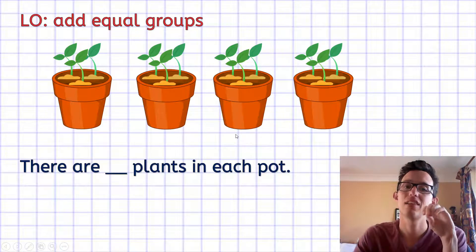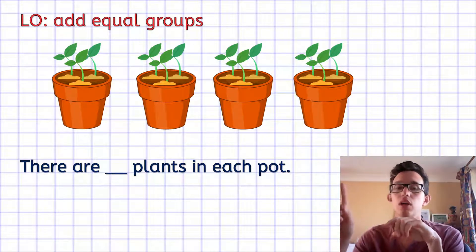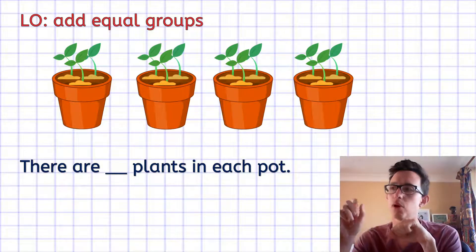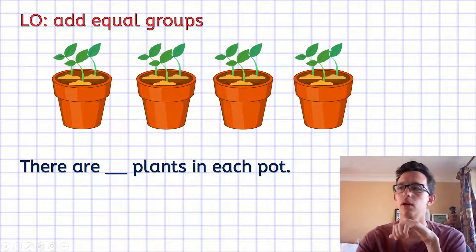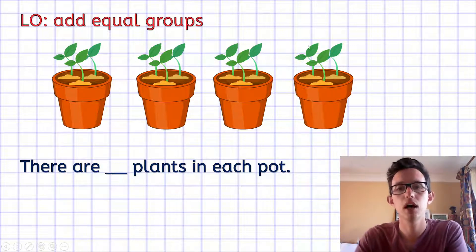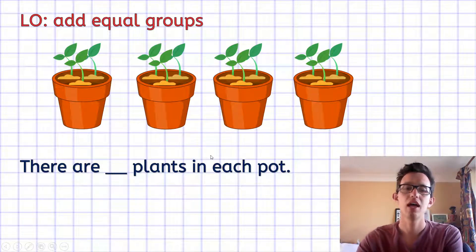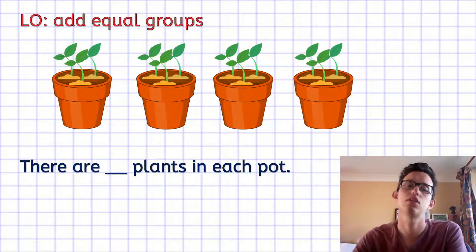The first thing we're going to look at is these pots. The question is: there are blank plants in each pot. So we're just going to look at one plant — this one here. How many plants are in that pot? We've got one, two, and three. All of the groups are equal today — there's no trick questions.